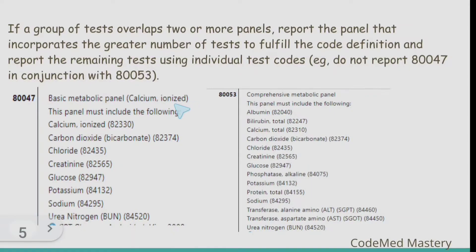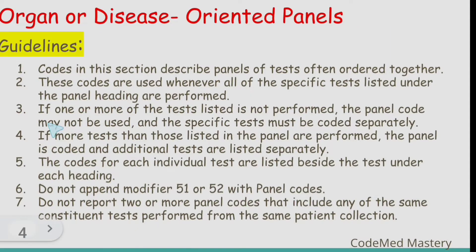The second guideline is these codes are used whenever all of the specific tests listed under the panel heading are performed. For example, to code 80047, Basic Metabolic Panel Calcium Ionized, the panel must include: calcium ionized, carbon dioxide, chloride, creatinine, glucose, potassium, sodium, and urea nitrogen. If you want to code comprehensive metabolic panel 80053, then all those listed tests must be included as well.